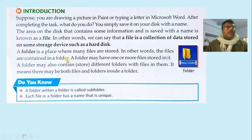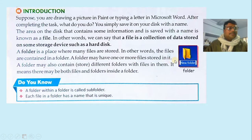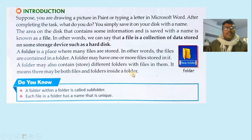A folder is the place where many files are stored. In other words, files are contained in a folder, so a folder may have one or more files stored in it. A folder may also contain different folders with files in them — meaning there may be both files and folders inside a folder. Folders look like the yellow-color folder icon shown here. A folder within a folder is called a subfolder, and each file in a folder has a unique name.